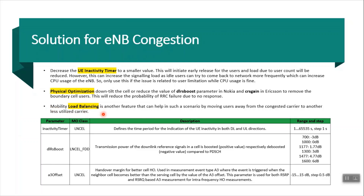In mobility load balancing there are many parameters, which I will discuss in the mobility video. In this video I just cover one parameter — the A3 offset. If we reduce the A3 offset value, which is the offset for the A3 event, the UE will move very fast to the neighbor side, giving a handover. These are the parameters to optimize in the case of eNodeB congestion.